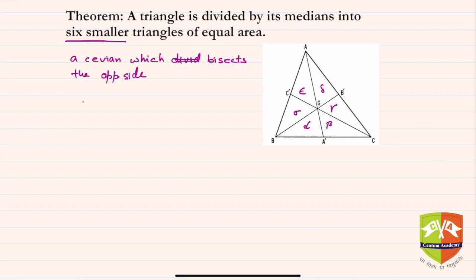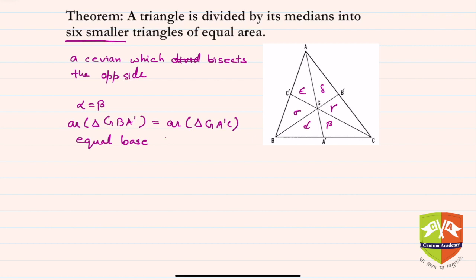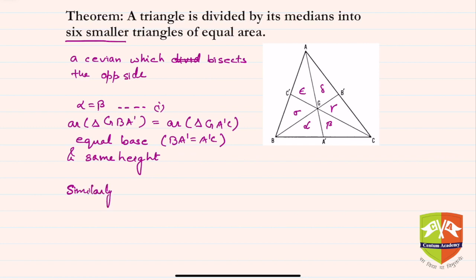Alpha is equal to beta, because the area of triangle GBA' is equal to the area of triangle GA'C. They have equal base: BA' equals A'C because AA' is a median, and they have the same height because both have the common vertex G.